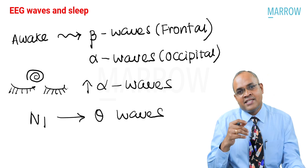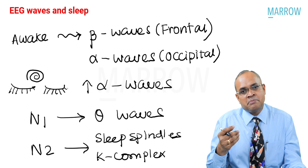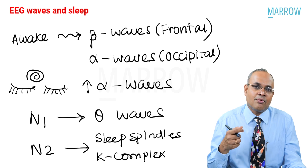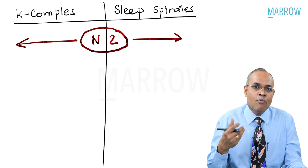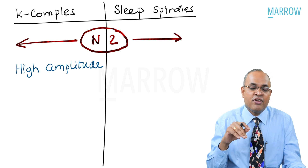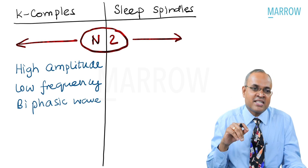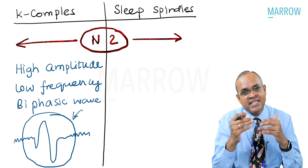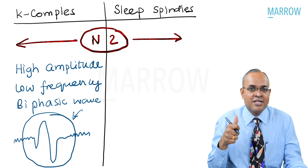The moment you get into sleep — light sleep, N1 — you start seeing theta waves. In N2 sleep, you typically see sleep spindles and K complexes. The K complex is a high-amplitude, high-voltage, low-frequency biphasic wave: a negative deflection followed by a complex positive wave. Sleep spindles, also in N2, are low-amplitude, high-frequency waves at about 12 to 14 Hz — a burst that comes and goes.